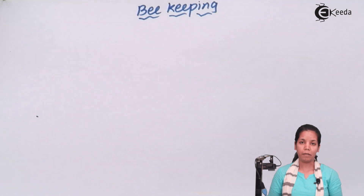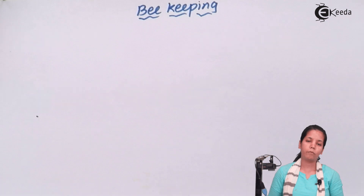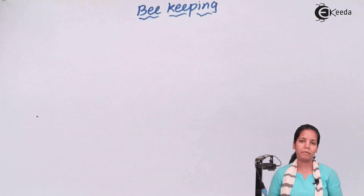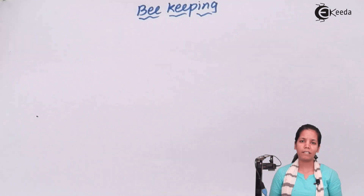Honeybees like the queen honeybee, drone honeybee, and worker honeybee are the families of the honeybee. Apis indica and Apis flora are all the different kinds of honeybees that are reared.